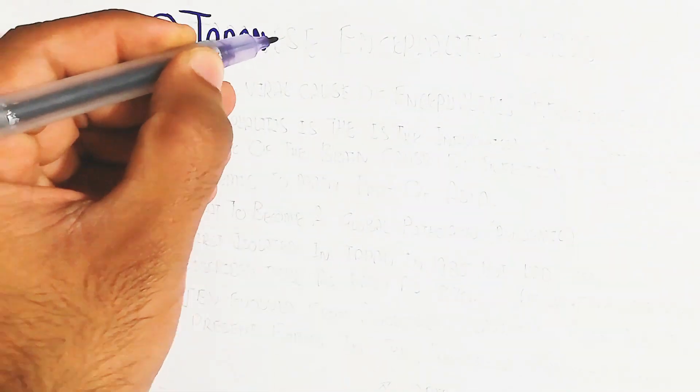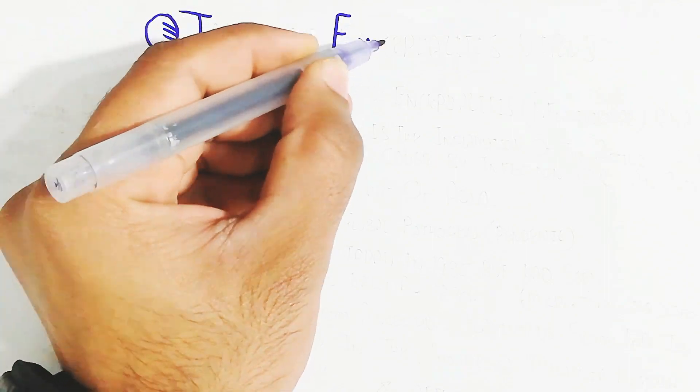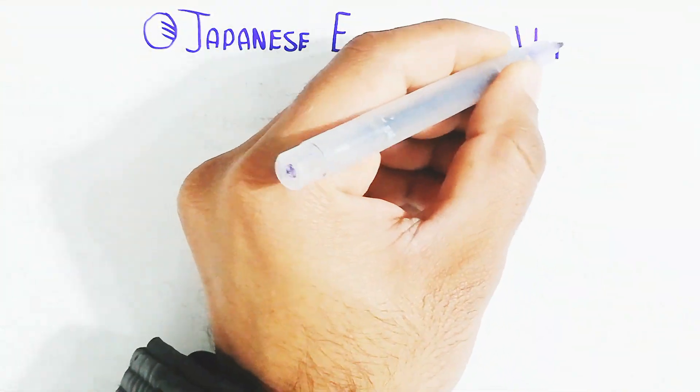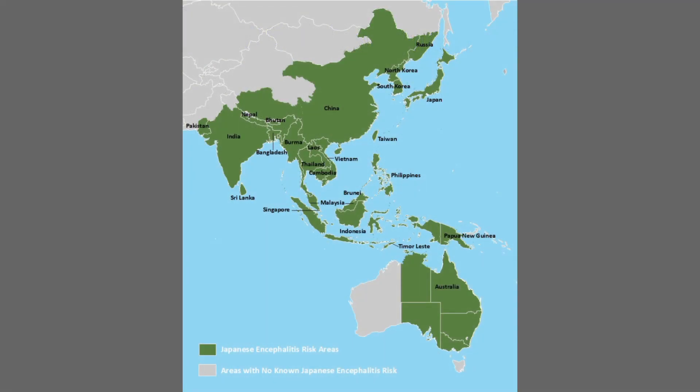Hello, in this video we will understand the Japanese encephalitis virus, or JEV for short. Here are different countries where the green color shows Japanese encephalitis risk areas, including Australia, India, China, Russia, Japan, Pakistan, and many other countries. The gray color shows unknown Japanese encephalitis risk. You can stop the video to watch these countries, but let's begin to understand JEV.